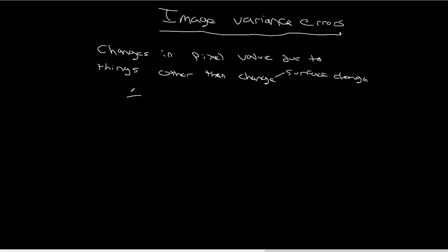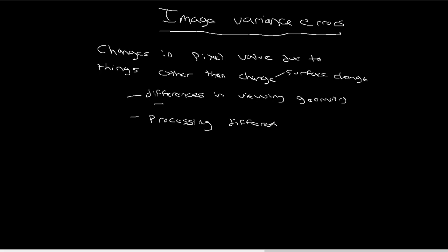Things that could cause this could be differences in viewing geometry — so maybe the angle, maybe you're imaging a tree and the leaves are angled slightly differently, or the sun is in a slightly different position. All of these things can affect the pixel value and have nothing to do with surface change. It could also be something like processing differences — maybe you processed one image to percent reflectance and the other one to percent reflectance, but their values are slightly different just because of differences in the processing chain. Not that either one is necessarily wrong, but they're just slightly different.